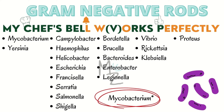For ease of memorization of gram negative rods, I have the sentence: 'My Chef's Bell Works Perfectly.' M is for Mycobacterium if you're including it in gram negative bacteria; skip it if not. Y is for Yersinia. C is for Campylobacter. H is for Haemophilus and Helicobacter. E is for Escherichia. F is for Francisella. S is for Serratia, Salmonella, and Shigella. B is for Bordetella, Brucella, and Bacteroides.